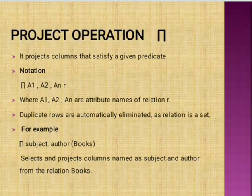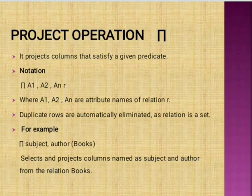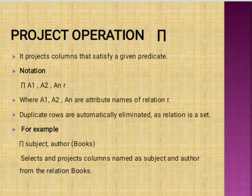Projection Operations retrieve columns of a table. It projects columns that satisfy a given predicate. The notation uses the projection operator with attributes a1, a2 up to aN on relation R, where a1, a2, aN are attribute names of the relation. Duplicate rows are automatically eliminated since a relation is a set.